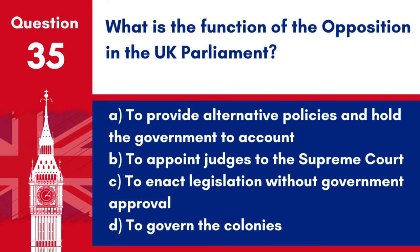Question 35: What is the function of the Opposition in the UK Parliament? a. To provide alternative policies and hold the government to account. b. To appoint judges to the Supreme Court. c. To enact legislation without government approval. d. To govern the colonies. Answer: a. To provide alternative policies and hold the government to account. The Opposition plays a crucial role in a parliamentary democracy by scrutinising the work of the government and offering alternative policies.